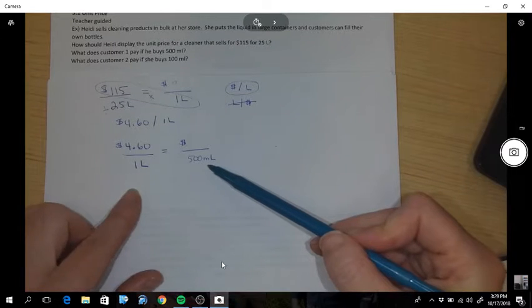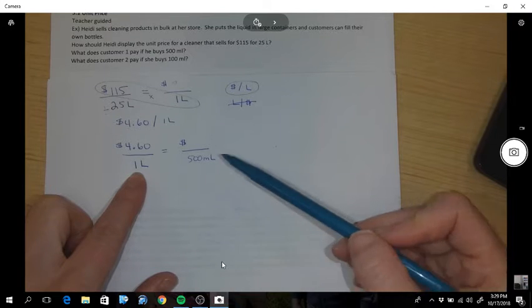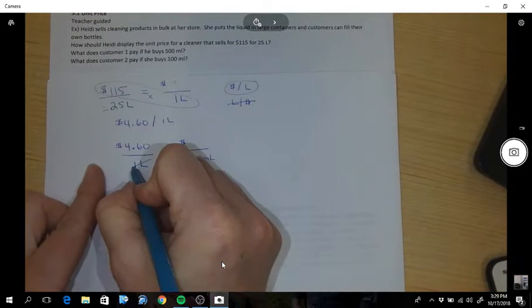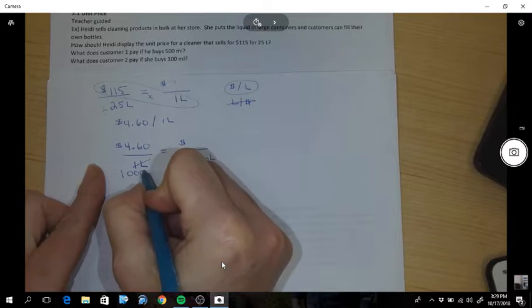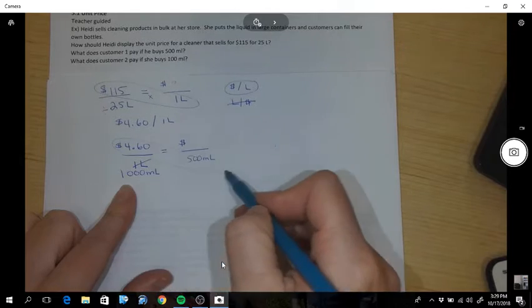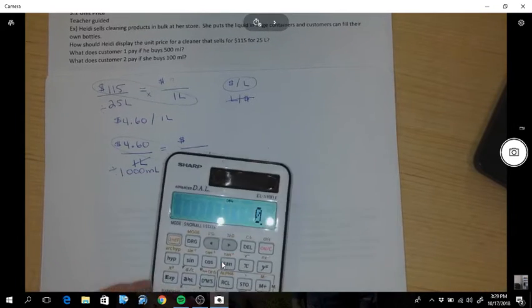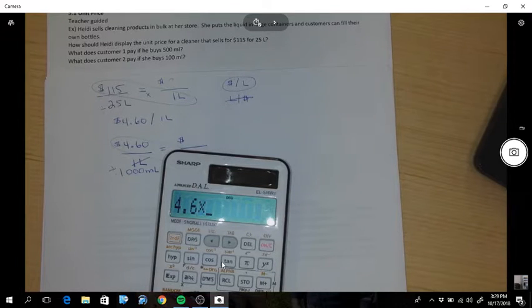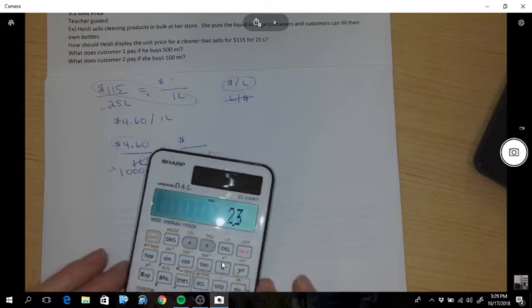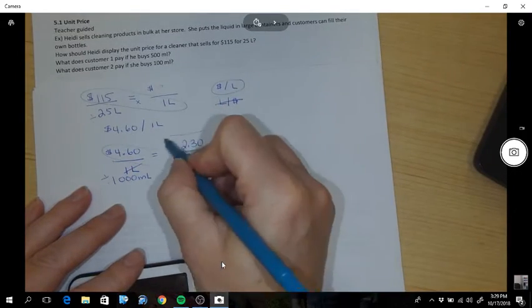So what do you know? You know one liter is the same as 1,000 milliliters. So let's cross this out and replace it with 1,000 milliliters. Now we can multiply and divide by 1,000. So $4.60 times 500 divided by 1,000 equals 2.3. So $2.30 is your answer.